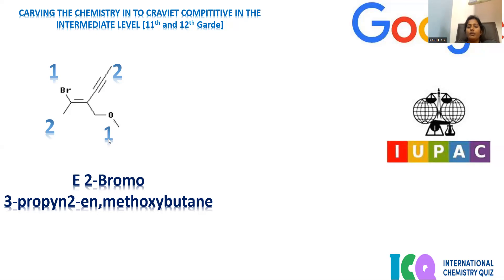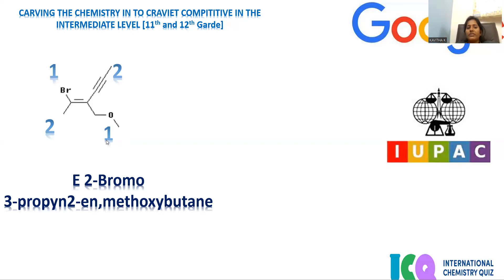So here you assign priority one to the oxygen side and priority two to the triple-bonded carbon side. After assigning higher and lower priorities, you have to check whether two similar priorities are on the same side or on opposite planes. If you observe this double bond, the two higher priorities are inclined in opposite directions, so we say it is the E configuration — E for entgegen — where two higher priority groups are in opposite dimensions.